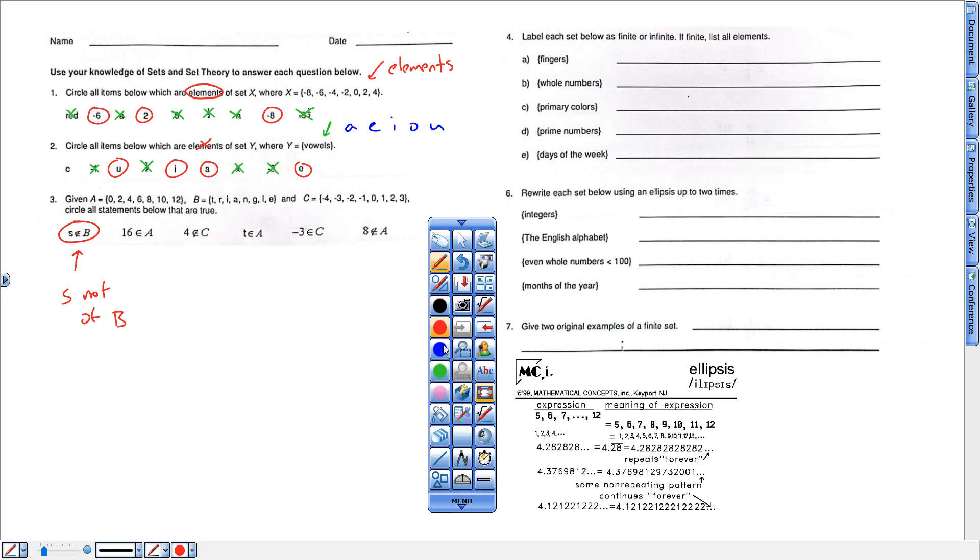If I look at the next one, 16 is an element of A. That's what this is saying because there's no slash through it. And I look at A, there's no 16 in that set. So I'm going to cross that one. That's not good. This one says 4 is not part of C. So if I look in C, 4 is not in there. So that one is true.